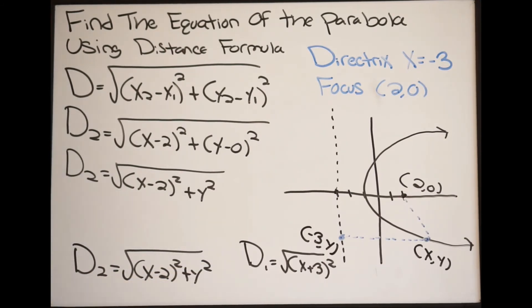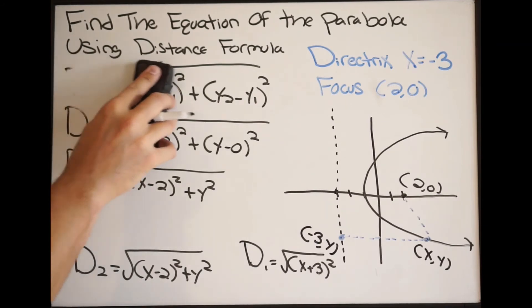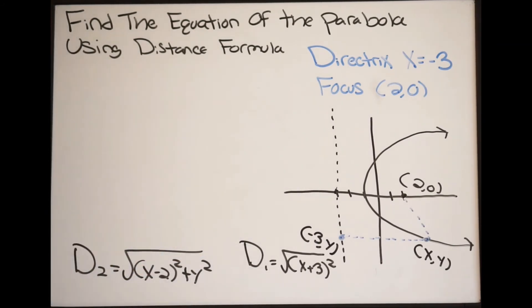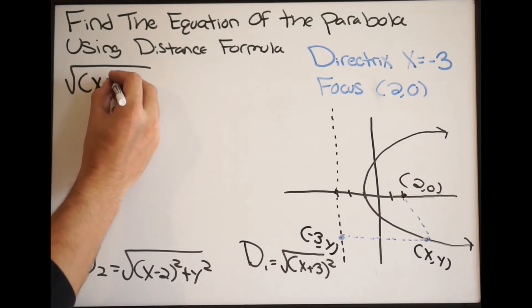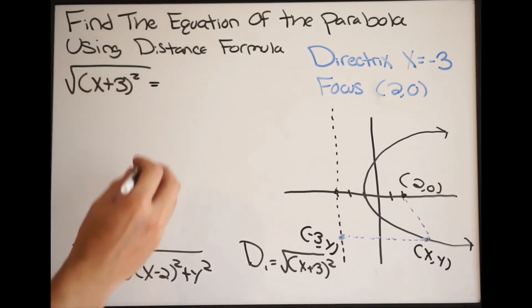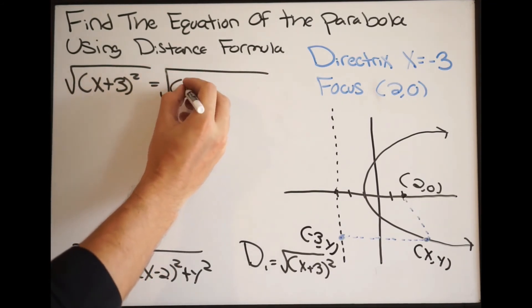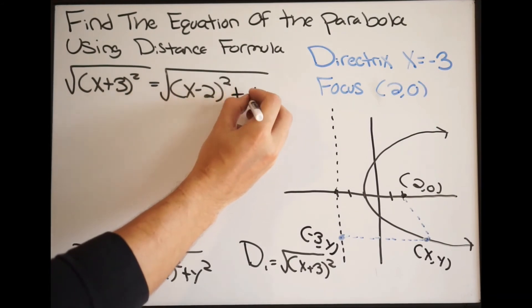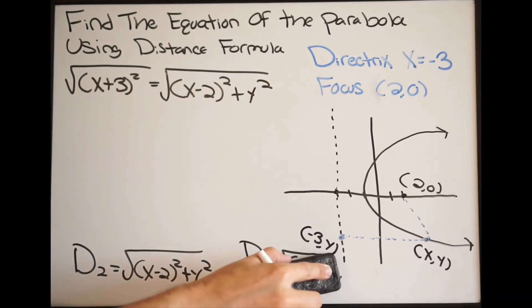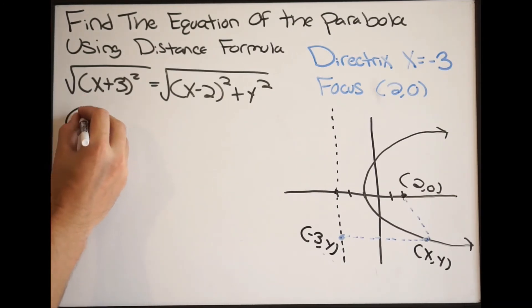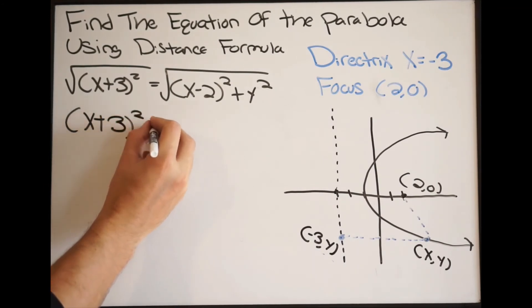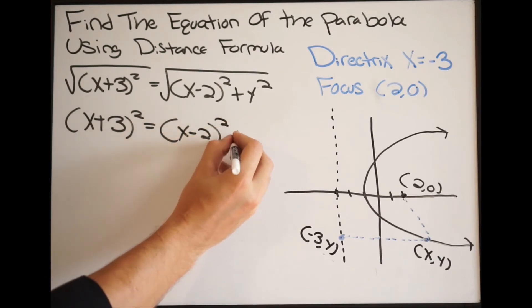Now that we have both distances, we set them equal to each other and solve. So: square root of x plus 3 squared equals square root of x minus 2 squared plus y squared. To get rid of the square roots, we square both sides, giving us x plus 3 squared equals x minus 2 squared plus y squared.